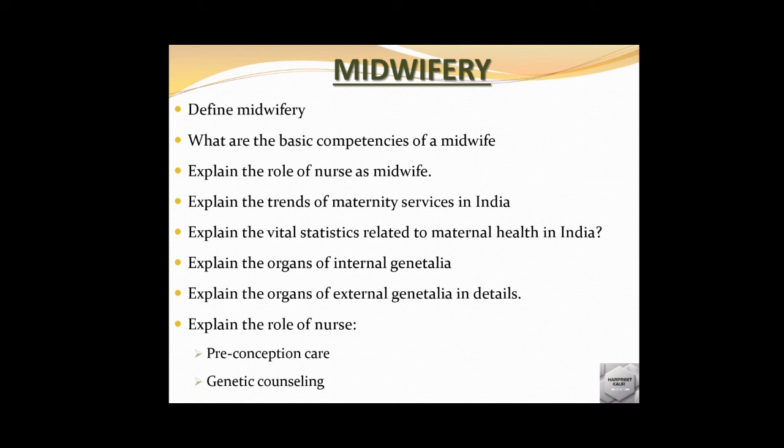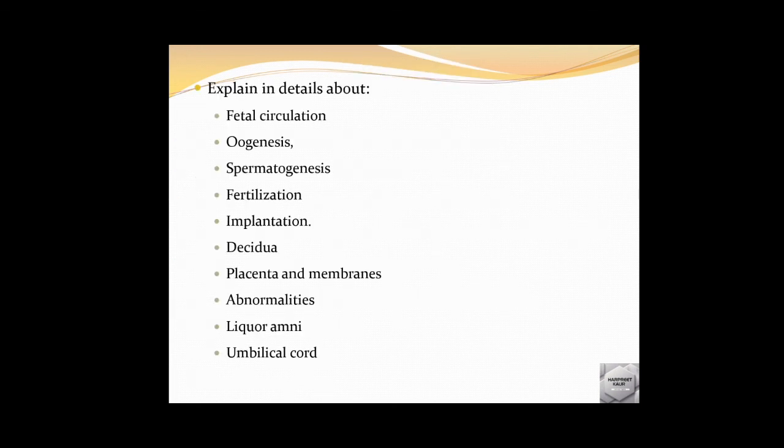Next, explain the role of the nurse in preconception care or genetic counseling — this is an important part. Topics like fetal circulation definitely come from this chapter. Also, gametogenesis — we can ask about oogenesis and spermatogenesis.